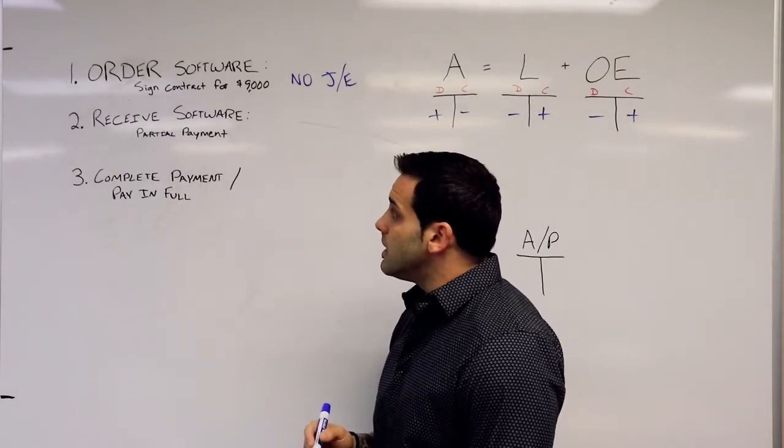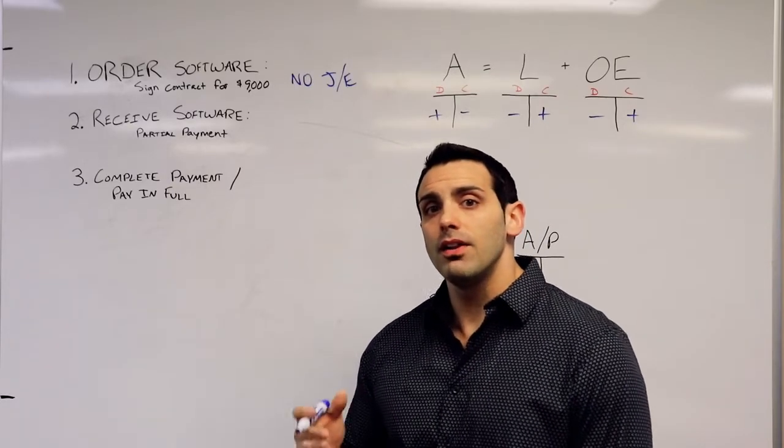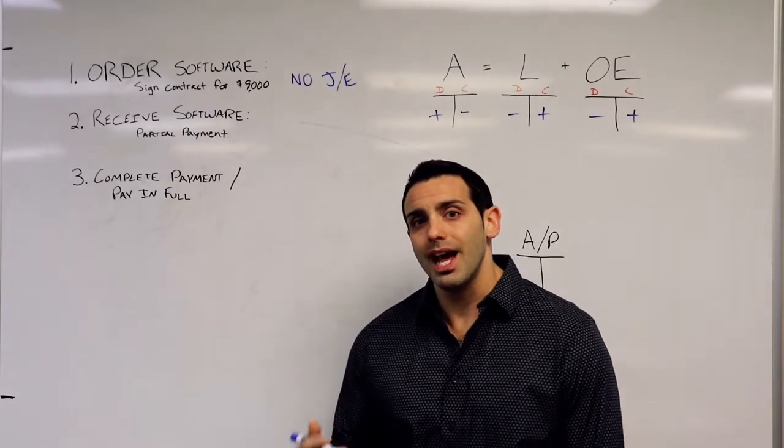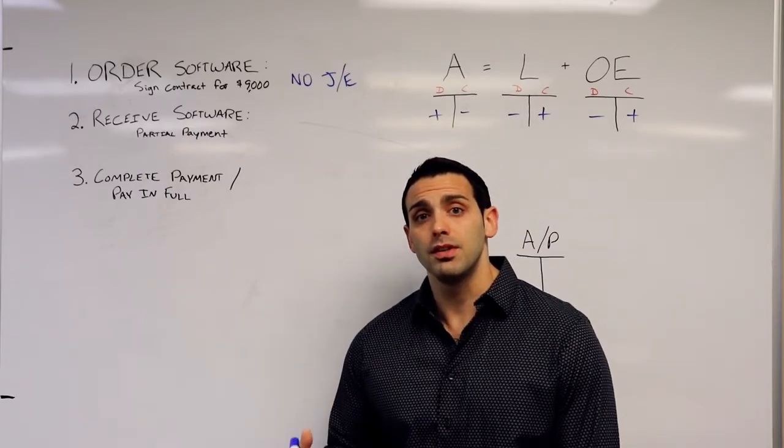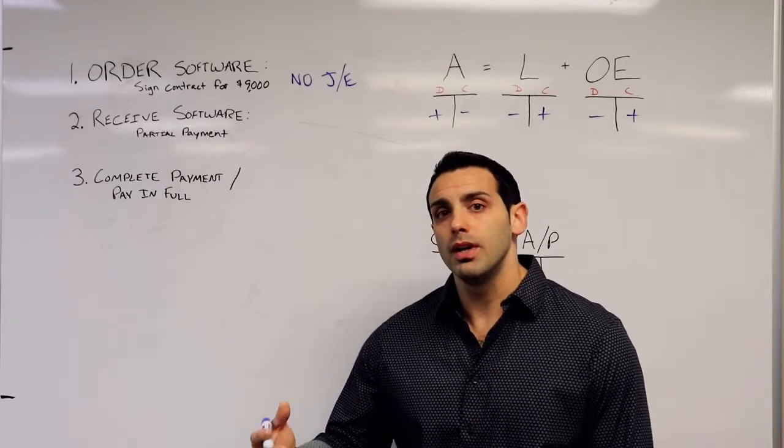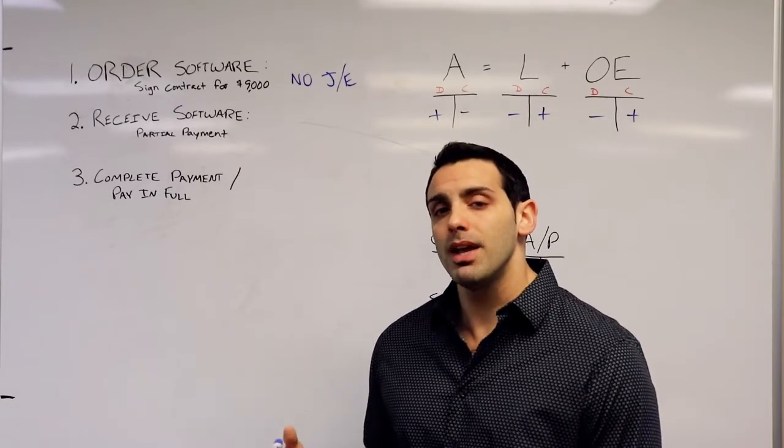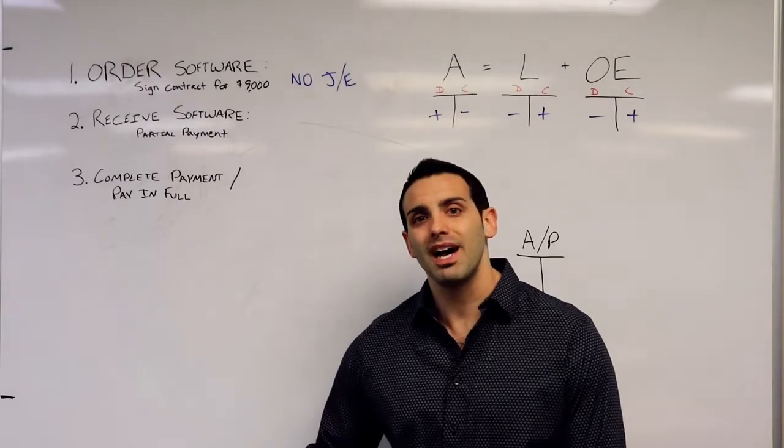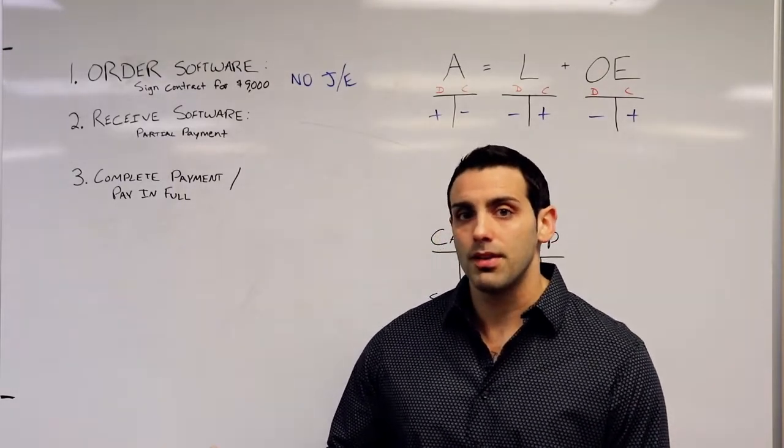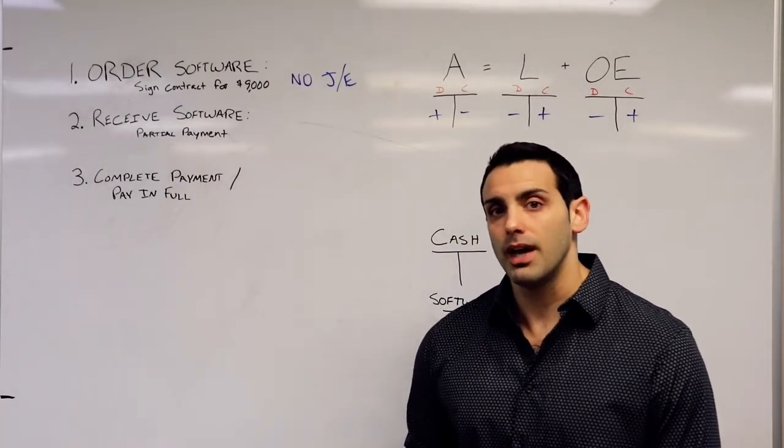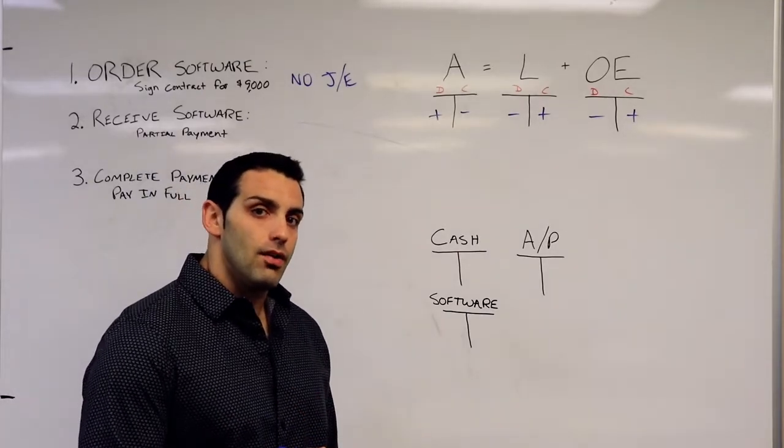The second transaction is when I receive that software. I finally received the full $9,000 of software that they promised to deliver. Now I am going to pay them $4,000 cash right then, and I'm going to make a promise to pay them the other $5,000, most likely in the next month. Let's work on the journal entry for that.